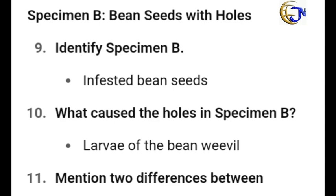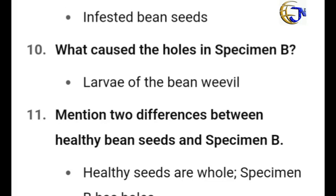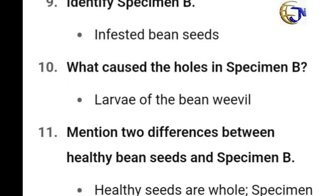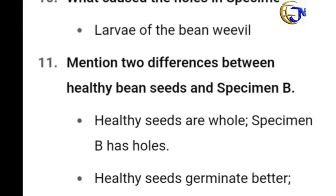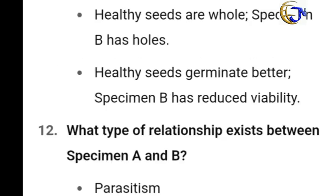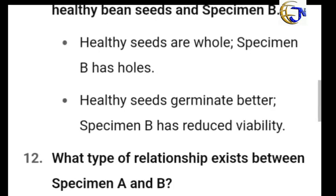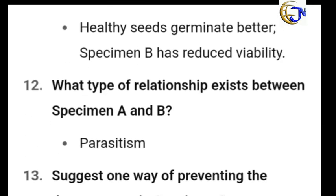Now let's go to Specimen B — a bean seed with holes. You are to identify the specimen as an infected bean seed because it has holes. What caused the holes? It is the larvae of the bean weevil, that is, larvae of Specimen A. Mention two differences between a healthy bean seed and Specimen B: healthy seeds are whole, while Specimen B has holes. Healthy seeds germinate better; Specimen B has reduced viability.